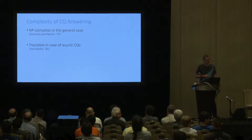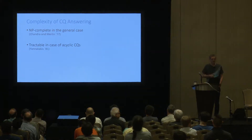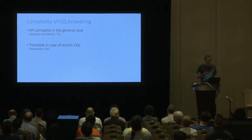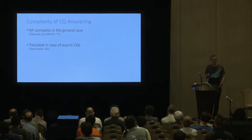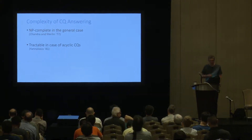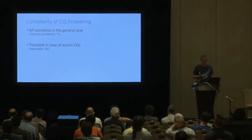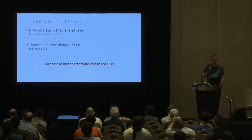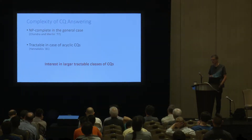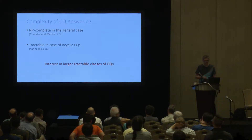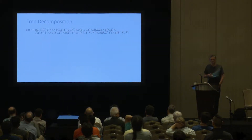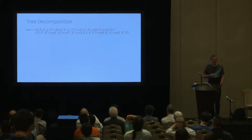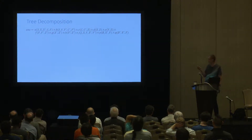Classical results tell us that conjunctive query evaluation is NP-complete in the general case and becomes tractable for acyclic conjunctive queries. A natural question is how can we get larger classes of tractable conjunctive query evaluation. The key to answering this question are various notions of widths. Let's start with tree widths and tree decompositions.